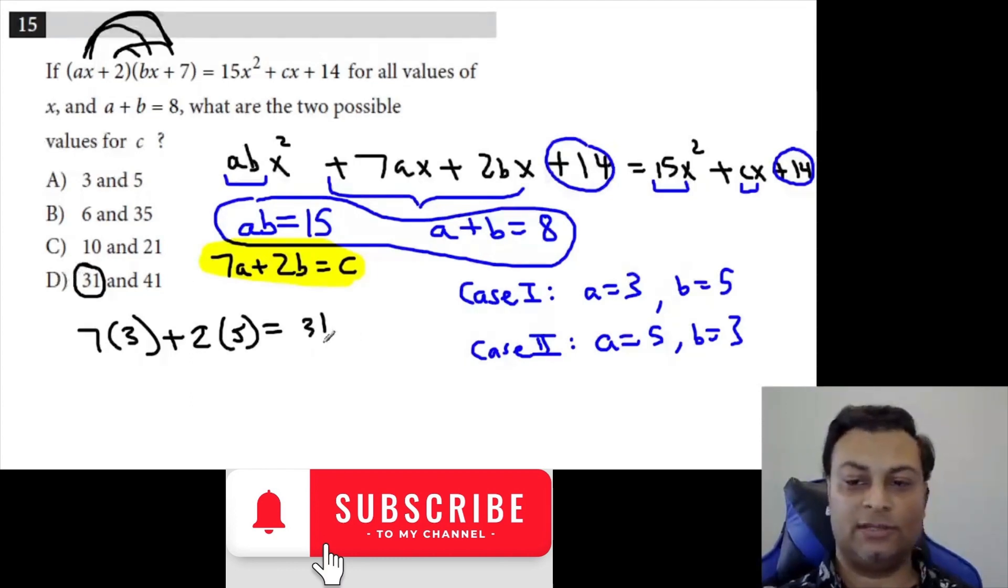But let's look at the other case, where A is 5, and B is 3. This is 35 plus 6, which is 41. And that's the other possible value of C. 31 and 41, so the answer is D.